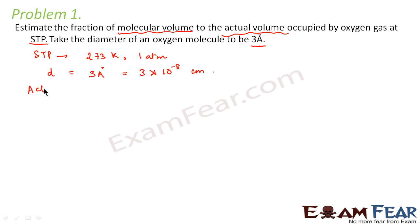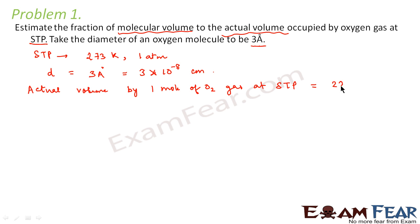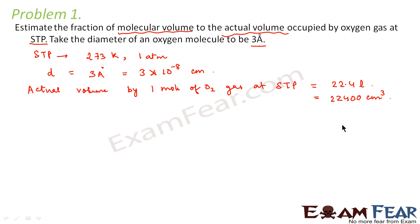First let's calculate the actual volume. The actual volume occupied by 1 mole of oxygen gas at standard temperature and pressure is equal to 22.4 liters. This is an experimental fact — at STP the volume occupied by 1 mole of any gas equals 22.4 liters, which is 22,400,000 centimeter cube.